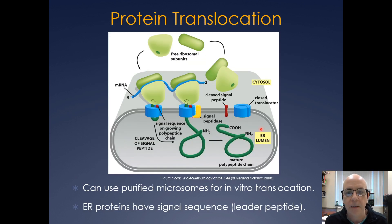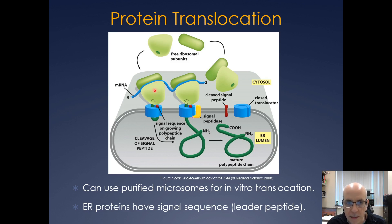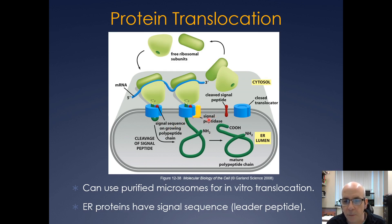Normally, free ribosomal subunits bind to a messenger RNA which is then translated. If there's a signal sequence, it directs the ribosome to the translocation pore, where co-translational translocation occurs — the protein is fed through as it's being translated. The signal sequence, especially for secreted proteins, often gets cleaved off by a protein called signal peptidase. Once the protein is fully translocated into the ER, it gets glycosylated and folded.